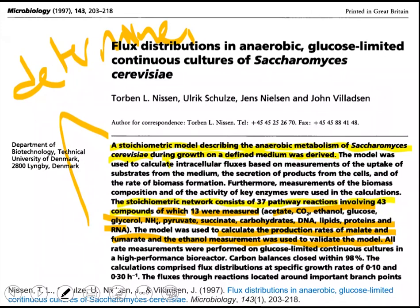They have two cases. They performed the experiments, this anaerobic growth of Saccharomyces cerevisiae, on two different growth rates. These are chemostat experiments indeed. One was performed at a dilution rate of 0.10, the other at a dilution rate of 0.30.